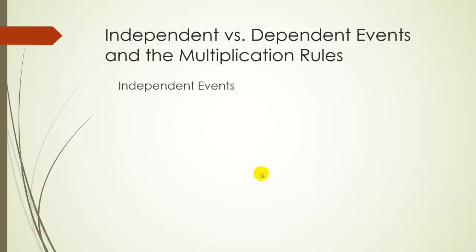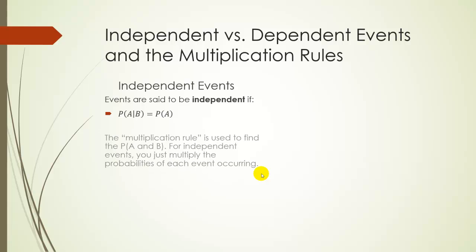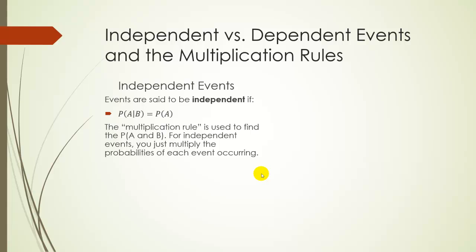So independent events would be where we have the probability of A given B is just the probability of A. In other words, the probabilities don't change based on something happening. If we want to use a multiplication rule for independent events, we can just multiply. So the probability of A and B would just be the probability of A times the probability of B. Nothing changed.